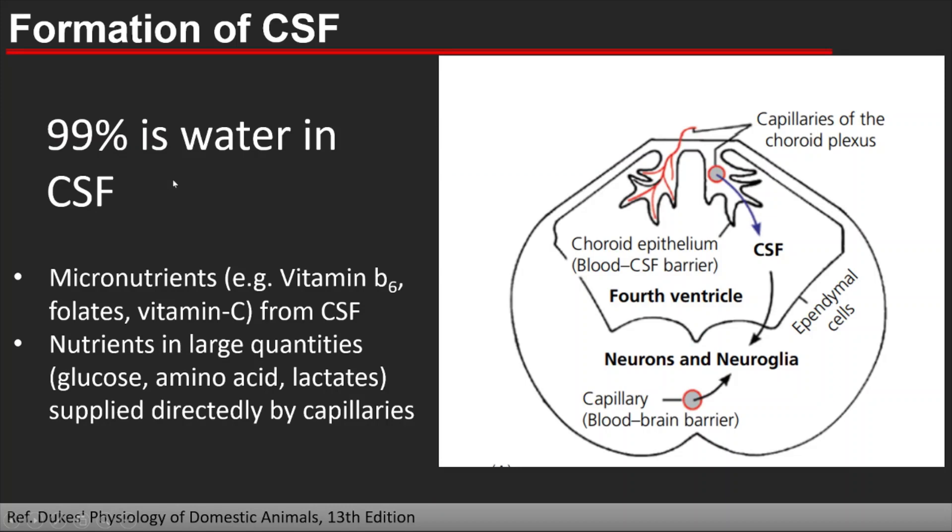The CSF has 99 percent water and micronutrients. The neurons or glial cells receive micronutrients from the CSF—micronutrients like vitamin B6, folate, and vitamin C. But nutrients in large quantities like glucose, amino acids, and lactates, the neurons and neuroglia receive directly from the capillaries. These interstitial capillaries of the nervous tissue have the blood-brain barrier; they have endothelial tight junctions.